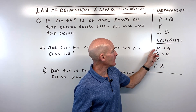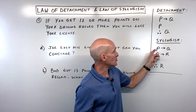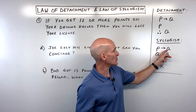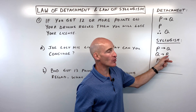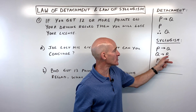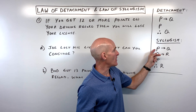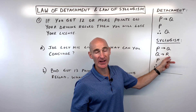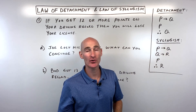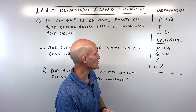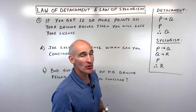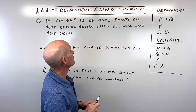It's kind of like: if you pass your final, then you pass your class. If you pass your class, then you're going to go on to the next course. So if you pass your final, through that chain of events, you're going to go on to the next math course. So that's the key. Let's go through some examples.